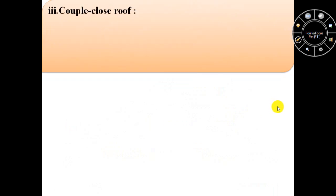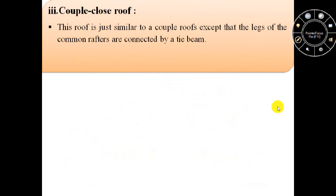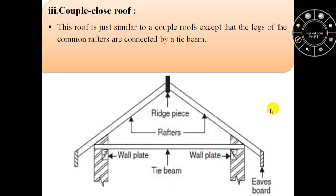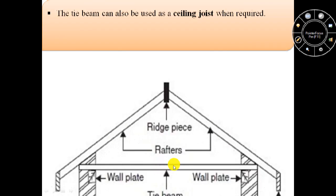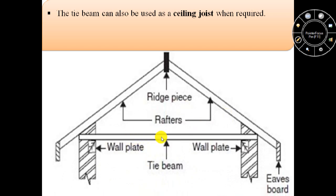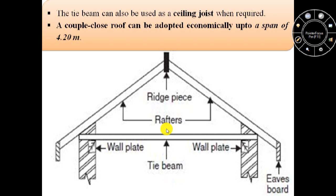The third form of single roof is couple close roof. This couple close roof is just similar to couple roofs except that the legs of the common rafters are connected by a tie beam. This tie beam prevents the tendency of rafters to spread out and thus the danger of overturning on the walls is also avoided. The tie beam can also be used as a ceiling joist when required. This couple close roof can be adopted economically up to a span of 4.20 meters.